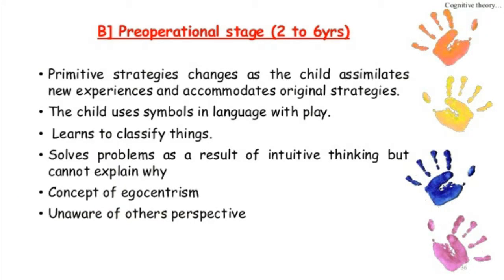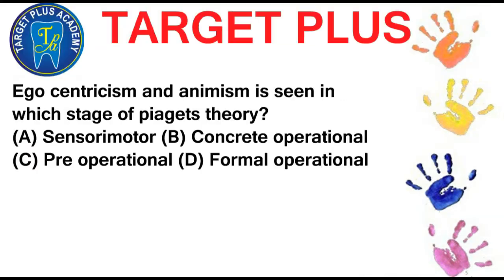Next is the pre-operational stage. The primitive strategy changes as the child assimilates new experience and accommodates original strategies. The child uses symbols in language and play and learns to classify things. The concept of egocentrism is seen in the pre-operational stage. Egocentrism refers to the child's inability to see a situation from another point of view. According to Piaget, the egocentric child assumes that other people see, hear, and feel exactly the same as the child does. Ego-centrism and animism are seen in the pre-operational stage.